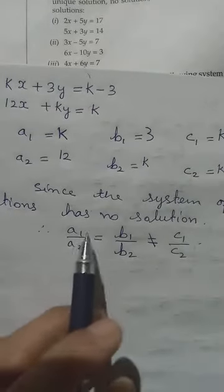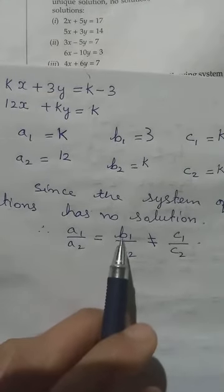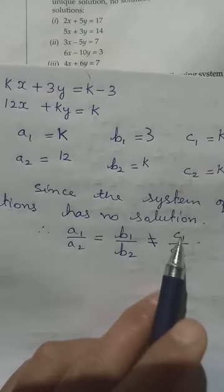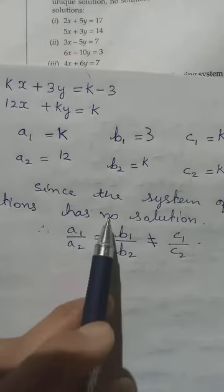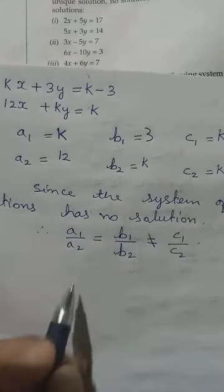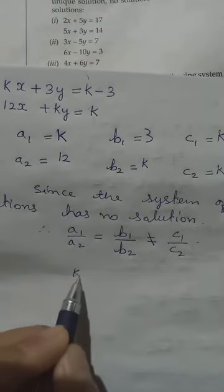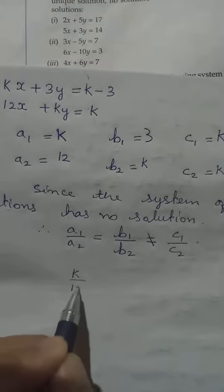Since the equation has no solution, we can write a₁/a₂ equal to b₁/b₂ not equal to c₁/c₂. Now we replace: a₁ is k, a₂ is 12.